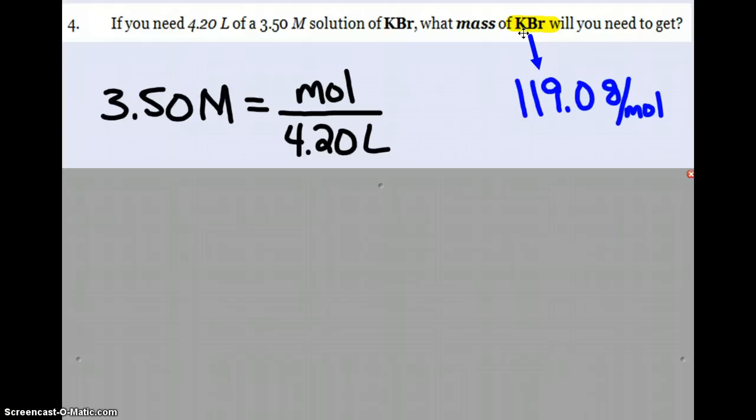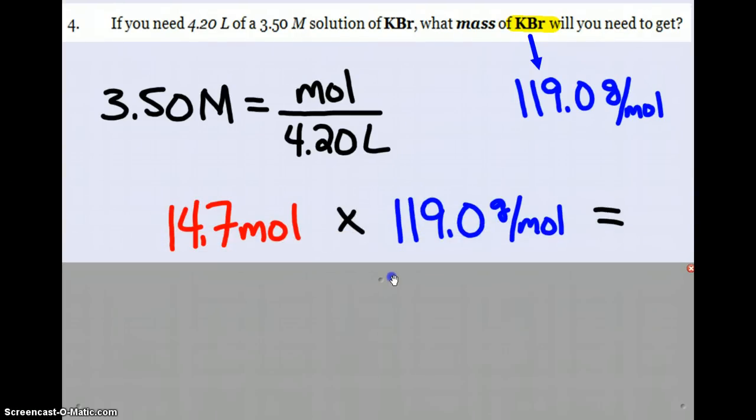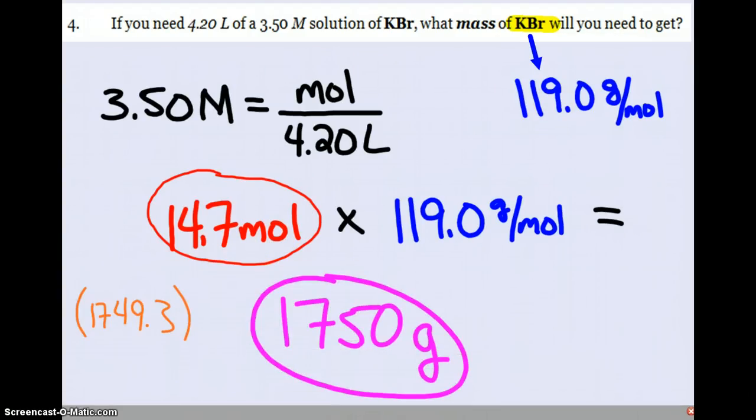K is 39.1, Br is 79.9, add them together, 119.0, and we'll use that in a moment. When I multiply 3.5 times 4.20 I will get 14.7 moles. So that again, 3.5 times 4.20 gives me the moles. I multiply that by the periodic table molar mass and that's how I figure out 1,750 grams, three sig figs from the problem.